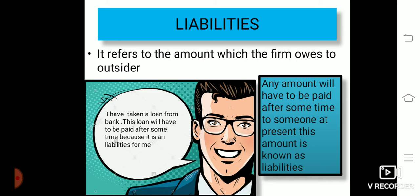The next accounting term is liabilities. Liabilities means the burden of the business — it refers to an amount which the firm owes to outsiders. Any amount that has to be paid to someone at a future time is known as a liability. For example, a loan taken from a bank will have to be paid after some time, so it is a liability.